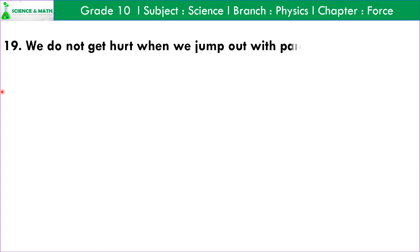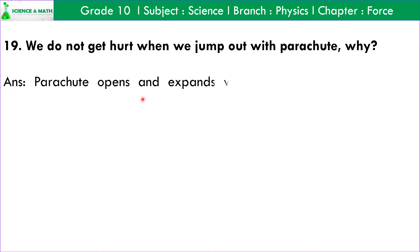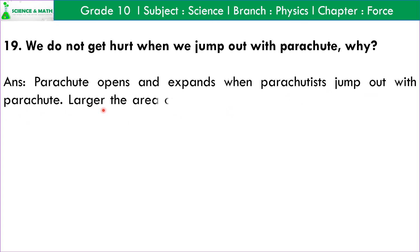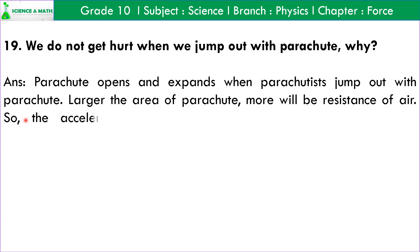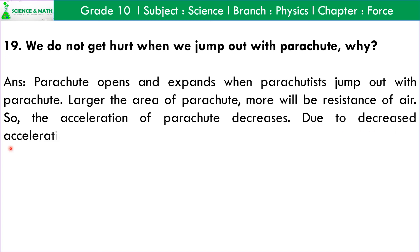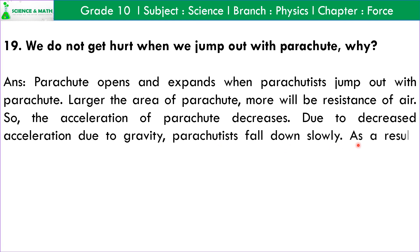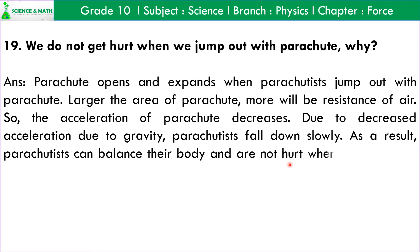Question number 19: We do not get hurt when we jump with a parachute. Why? Answer: When a parachutist jumps out with a parachute, the parachute opens and expands. The larger the area of the parachute, the more will be the resistance of air. So the acceleration of the parachute decreases. Due to decreased acceleration due to gravity, the parachute falls down slowly. As a result, parachutists can balance their body and are not hurt when they jump with a parachute.